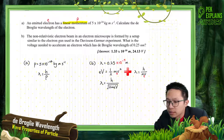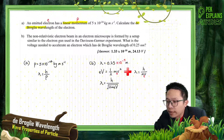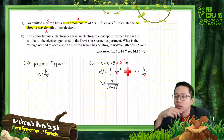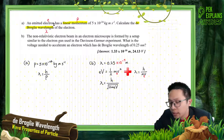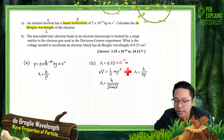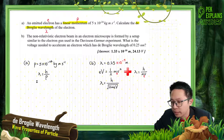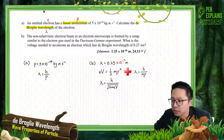The question asks us to find the De Broglie wavelength — that means we want to find lambda. This question is simple. The momentum is provided, so just use the De Broglie wavelength formula, which relates the wavelength and the momentum. Just substitute inside.